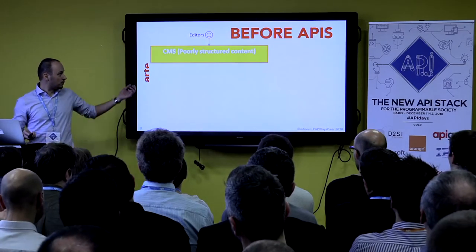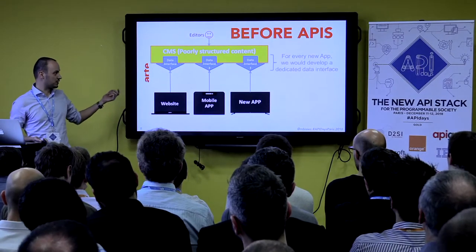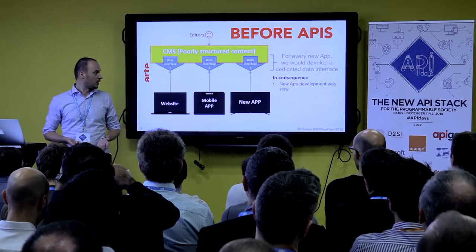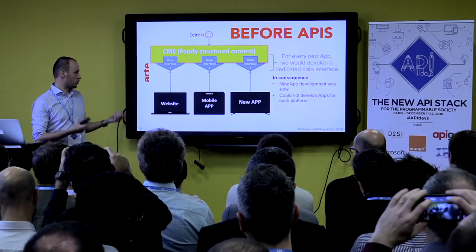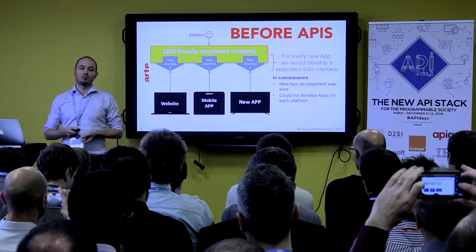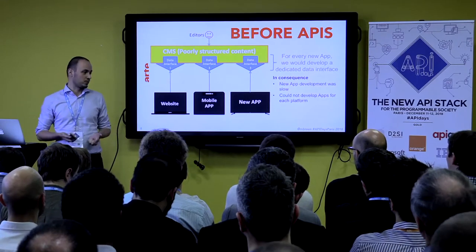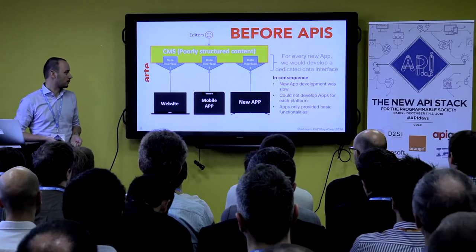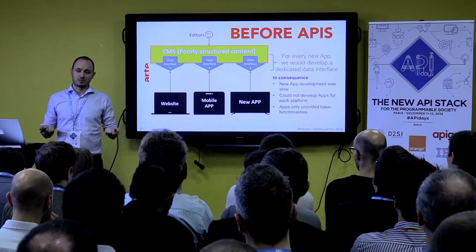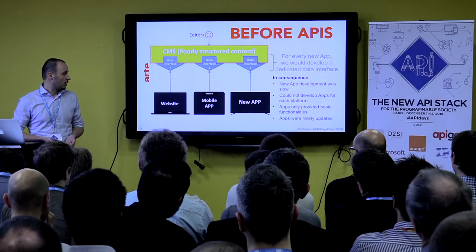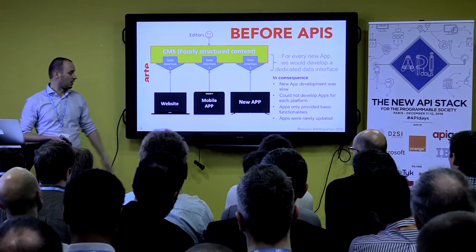Before APIs, every time we wanted to make a new app, we had to build a new data interface — not very efficient. This was slowing app development down. We had to choose the platforms where we would make an app; we could not make apps for every platform — it was just too costly. The apps pretty much provided basic functionalities like replay, and they were rarely updated because we rarely updated the associated data interface.